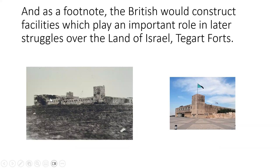The British also left behind institutions that would play a big role in later wars — Taggart Forts. To control the territory the British built police forts on high ground all over the country to keep an eye on Arab villages and respond quickly to attacks. Many became important battlegrounds because of their fortified hilltop positions, fought over in both 1948 and 1967. The tank museum at Latrun, visible here, was built by the British, taken over by the Transjordanians in 1948, and fought over in both 1948 and 1967.